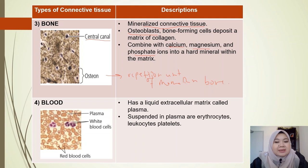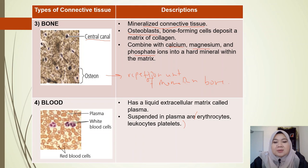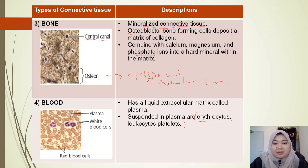Blood is also a connective tissue. Blood has a liquid extracellular matrix called plasma, and suspended in the plasma are the blood cells. There are three main blood cells: erythrocytes (red blood cells), leukocytes (white blood cells), and platelets.